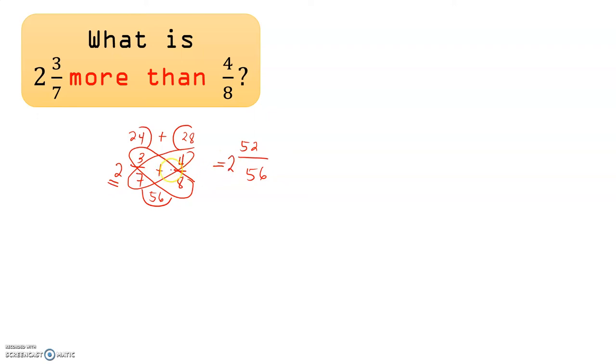If there's another whole number here, we'll have to add 2 to the whole number here, and that's what we'll write here. Now we already found out that the simplest form of 52/56 is 13/14. So our final answer now will be 2 and 13/14.